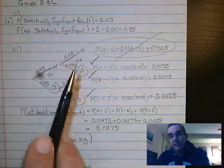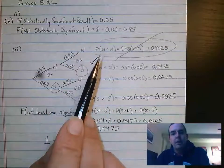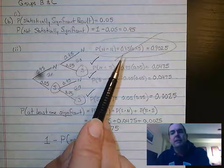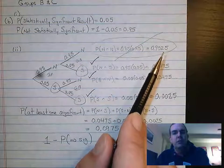And since the problem said these tests are all independent of one another, we're allowed to multiply. So the probability of two not significant tests is 0.95 times 0.95, which gives me 0.9025.